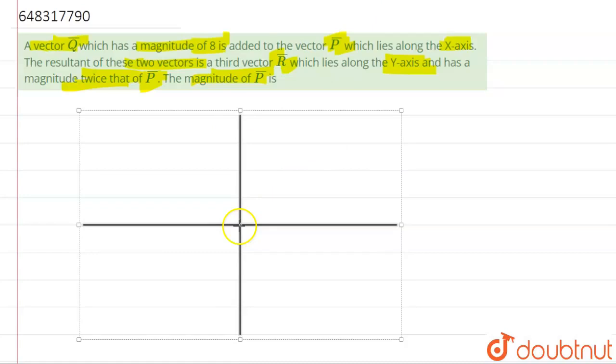There is a vector P which is along the x-axis means it's along this direction. And there is another vector. So this is along the x-axis, let me draw it properly. This is the P vector.